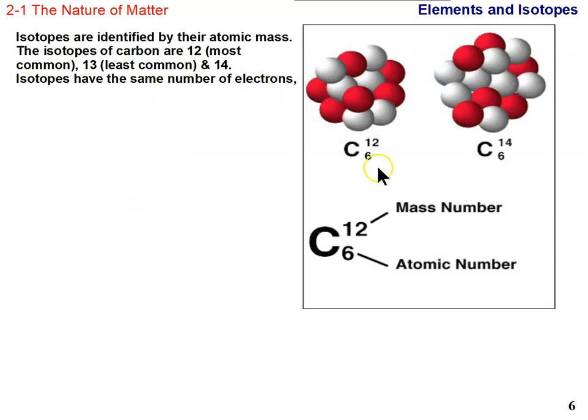Isotopes have the same number of electrons. We're not changing the number of electrons or protons, only the number of neutrons. Different isotopes have different numbers of neutrons. But because they have the same number of electrons, and the electrons are what are involved in chemical reactions, they have the same chemical properties. Carbon 12, 13, and 14 all behave the same way. For example, you have some carbon 14 in your body right now, and it's not hurting you.